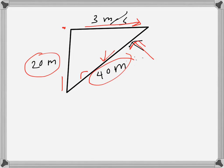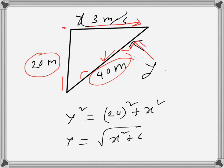We can designate this as y and this one as x. So this becomes y² = 20² + x², which means y = √(x² + 400). We know this, and when the string length is 40 meters...